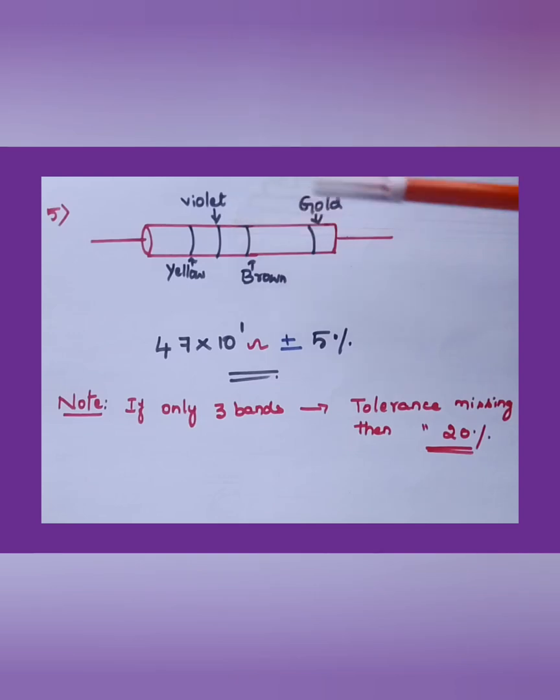And the point to be noted here is: if only three bands are given, the fourth band is not mentioned, then the tolerance, means the fourth band is missing, means we have to take the tolerance as 20 percentage only. We have to consider that as white only.